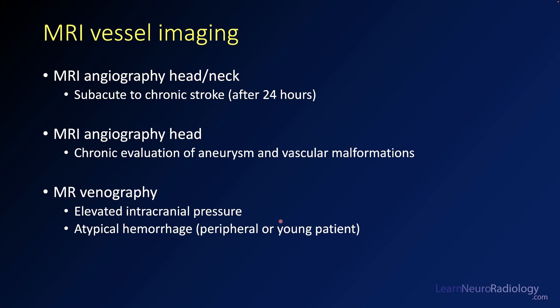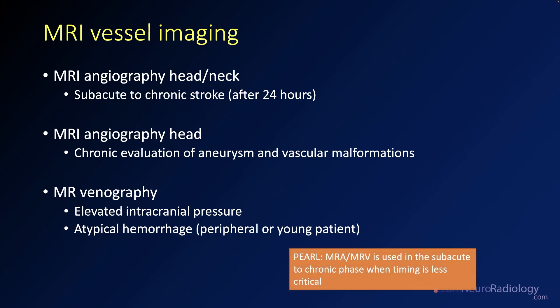For vessel imaging on MRI, we'll often use it in stroke, particularly in subacute to chronic stroke — after about 24 hours — when we're not making a time-critical decision about angiography. MR angiography is often done to evaluate aneurysm and vascular malformations in the outpatient setting. For MR venography, the indications are very similar to CT: elevated intracranial pressure or atypical hemorrhage, just when time is less critical. To highlight that point, MRA and MRV are used in the subacute phase when timing is less important.